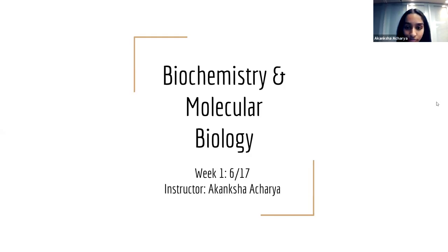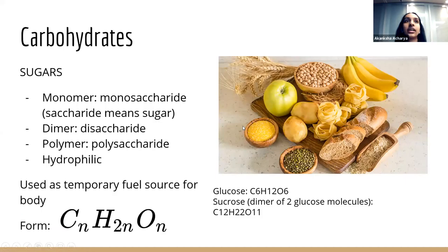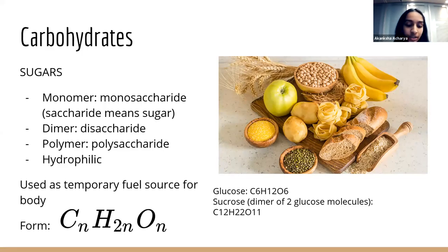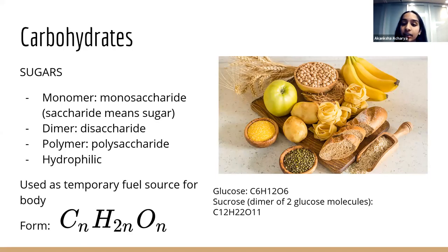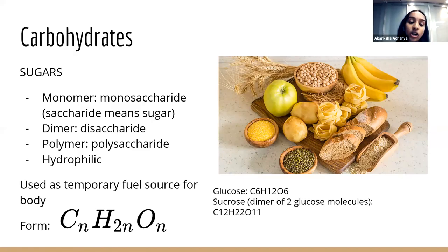We're going to go straight into macromolecules. Macromolecules are essentially the four main basic things that make up our body or any biological molecule, starting with carbohydrates. Carbs are also sugars. If you've ever eaten a piece of bread or a cracker, try dissolving it in your mouth — you might realize it's starting to taste a little sweet, because sugars are carbs. Bread is starchy, pasta — those are all carbohydrates. Every single macromolecule has a monomer and a polymer. For carbs, the monomer is a monosaccharide — that's the basic unit — and a polysaccharide is a bunch of monosaccharides strung together.